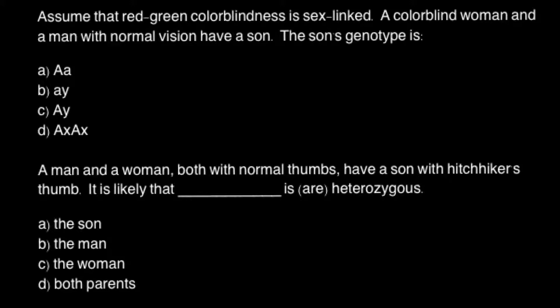Assume that red-green colorblindness is sex-linked. A colorblind woman and a man with normal vision have a son. The son's genotype is... and here are four genotypes to choose from. If you need time to think, you may stop the video here, and when you are ready you can run the video again and compare your answer with my answer and explanation.